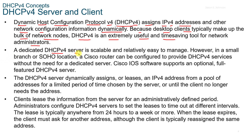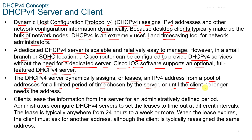A dedicated DHCPv4 server is scalable and relatively easy to manage. However, in a small branch or SOHO location, a Cisco router can be configured to provide DHCPv4 services without a dedicated server. Cisco IOS software supports an optional, full-featured v4 server. The v4 server dynamically assigns or leases a v4 address from a pool of addresses for a limited period of time chosen by the server, or until the client no longer needs the address. Lease times are typically anywhere from 24 hours to a week or more.